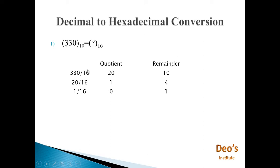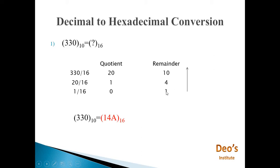We write the remainders in reverse order to get the hexadecimal value for 330. The remainders were 10, 4, and 1. Writing in reverse order: 1, 4, and 10 — which is represented by letter A. So 1, 4, A is the hexadecimal equivalent of 330 in decimal.